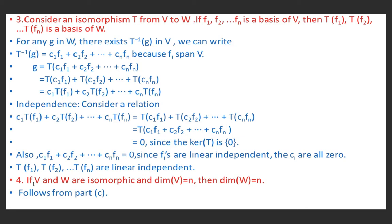Next property: if V and W are isomorphic and dim(V) = n, then dim(W) = n. From the previous property, if f₁, …, fₙ is a basis of V then T(f₁), …, T(fₙ) is a basis of W. The number of elements in the basis of V is n, so the number of elements in the basis of W is also n. Therefore dim(W) = n, since dimension is the number of elements in a basis.